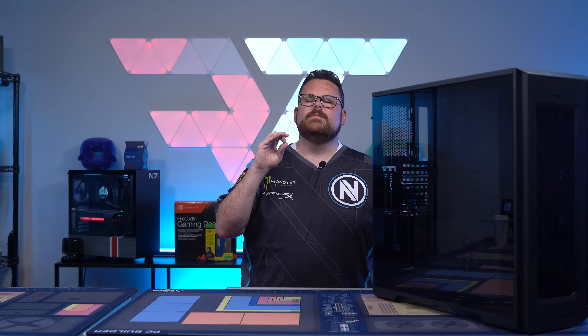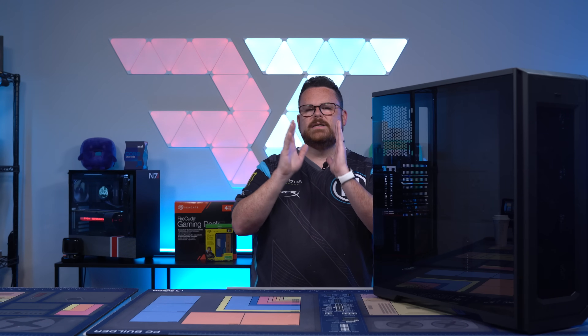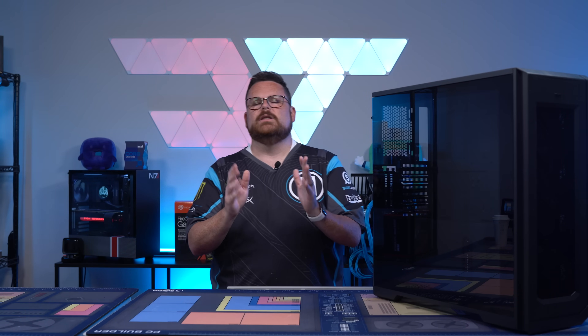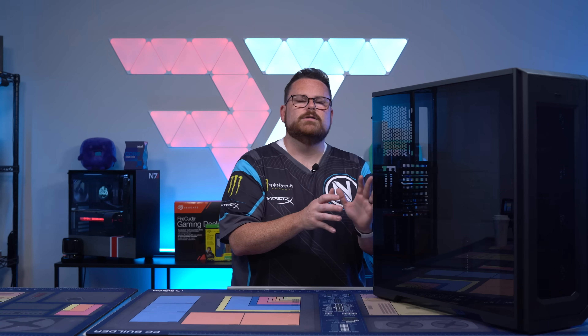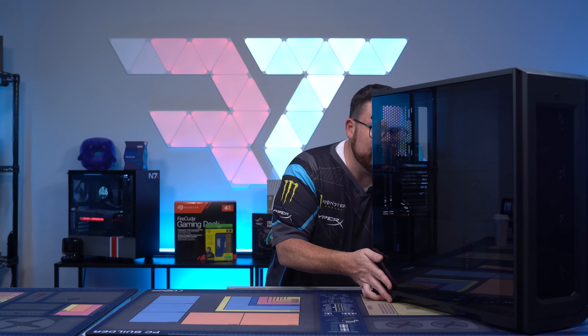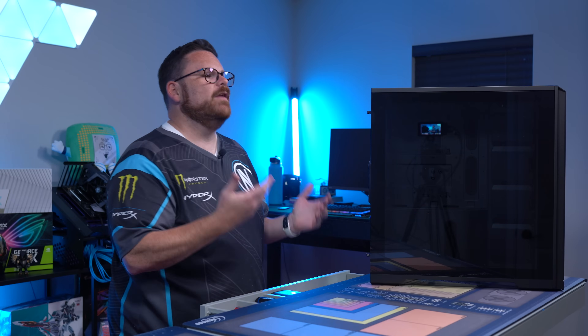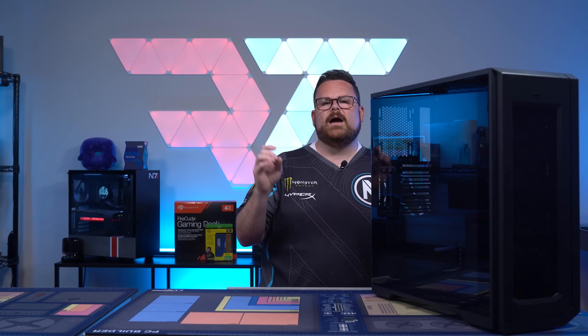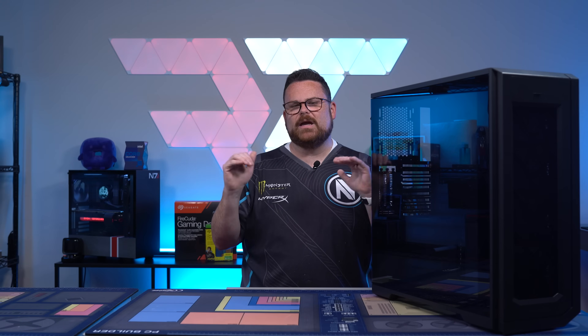Now that we've decided on form factor, let's talk about things to consider when thinking about your case and cooling. We've done in-depth videos on different parts of cooling, but let's talk about these at a high level. For air cooling builds, you're looking for front panels and side panels that are very open and good for unimpeded airflow — a panel you can see right through is a pretty good sign for an easy airflow build.